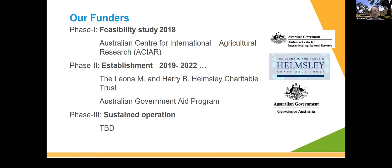You can think of where we're at in this program as having three phases. Phase one established the feasibility, funded in 2018, putting forward the argument for other funders to implement the establishment — funded by the Australian Centre for International Agricultural Research. Since 2019, we've been funded for the establishment phase, with key funders being the Leona M. and Harry B. Helmsley Charitable Trust and the Australian Government Aid Program. They have funded us to establish something sustainable, not a limited-time program where we build something and walk away. Phase three is sustainment, and we don't yet know where the funding for that is coming from.